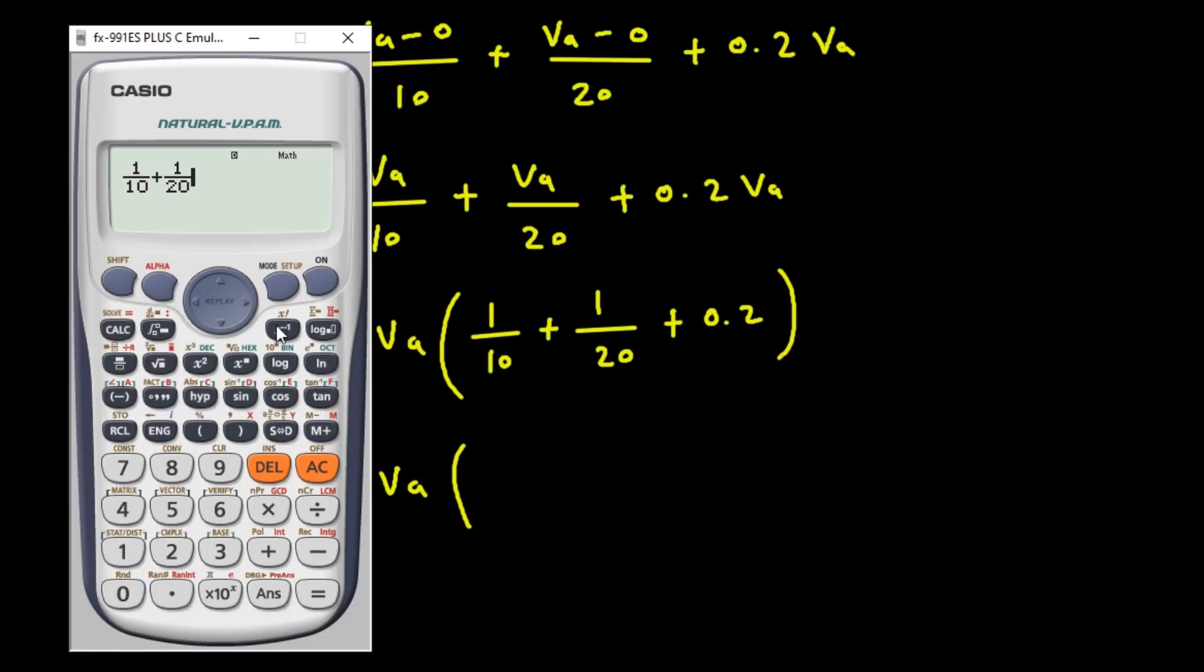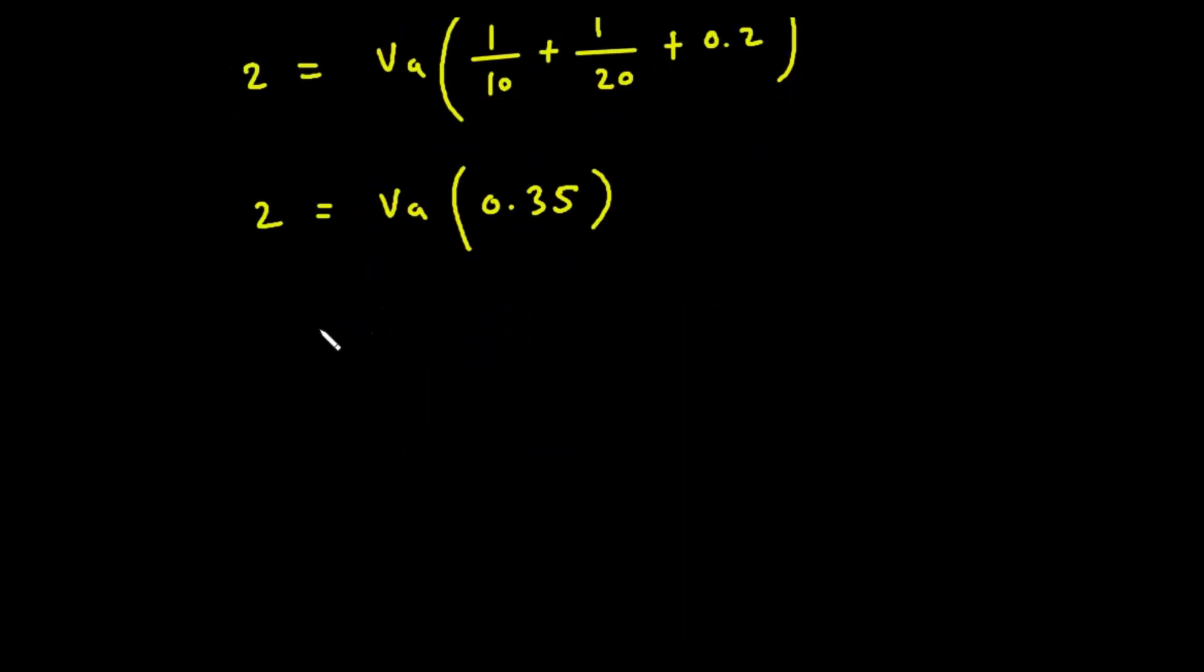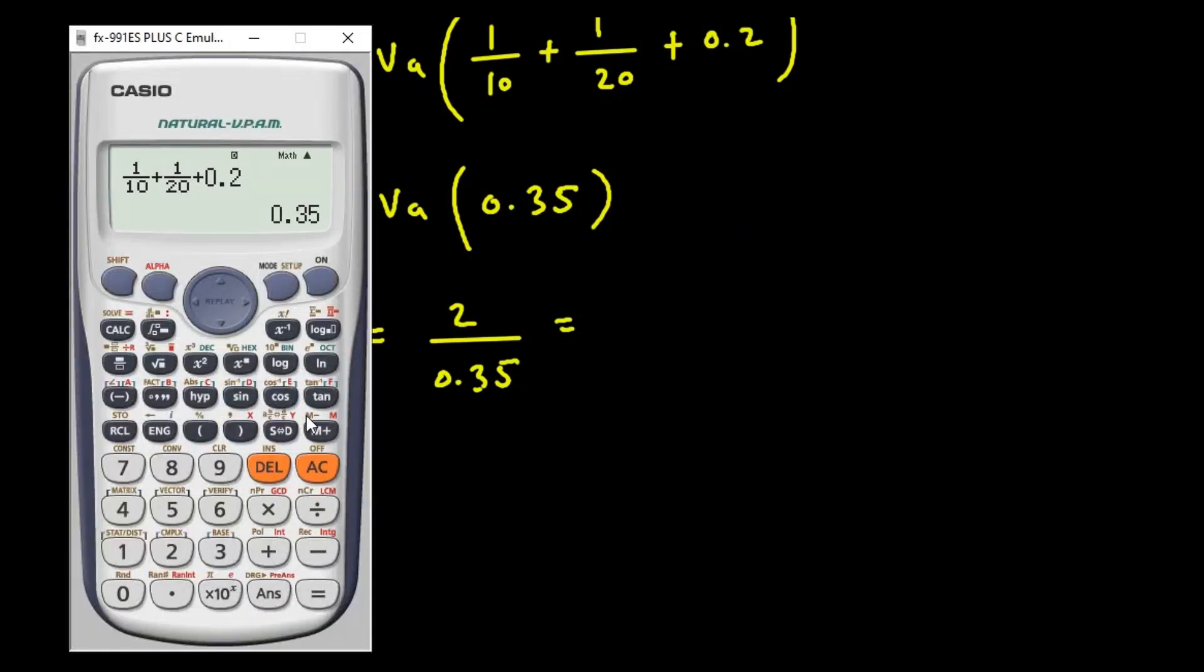So it equals 0.35. So here we can write 2 equals Va times 0.35. Va equals 2 upon 0.35. So 2 upon 0.35 is 5.71 volt.